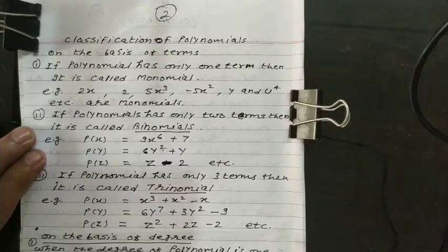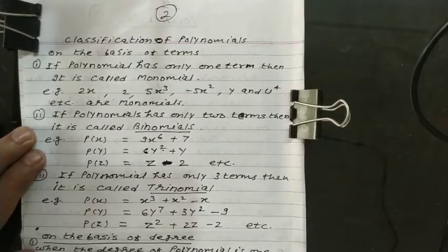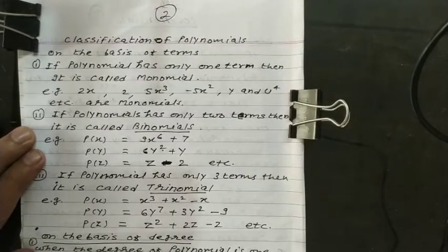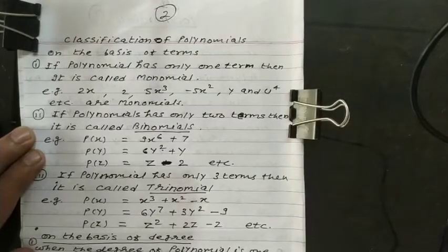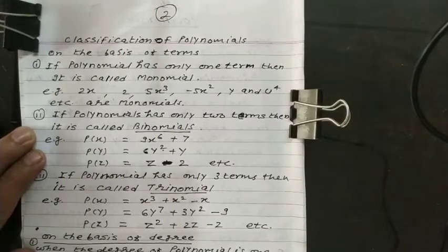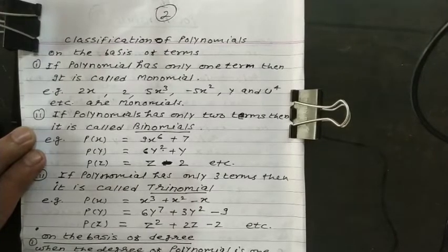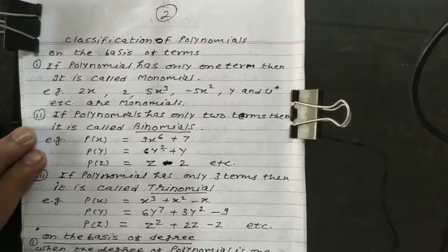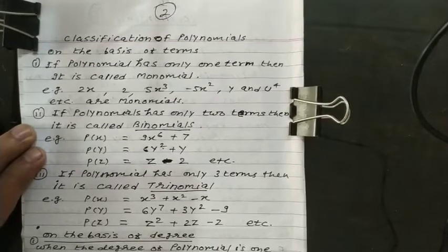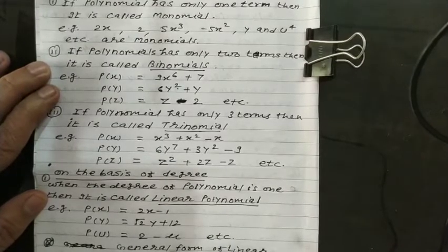Now, on the basis of degree, when the degree of a polynomial is 1, it is called linear polynomial. Degree means the exponent of the variable. See the examples p(x), p(y), and p(u). The exponent of x is 1, exponent of y is 1, exponent of u is 1. Therefore, it is known as linear polynomial because of its degree.